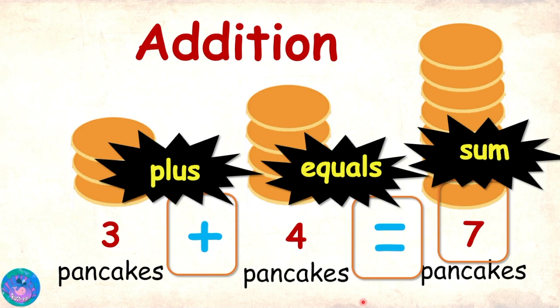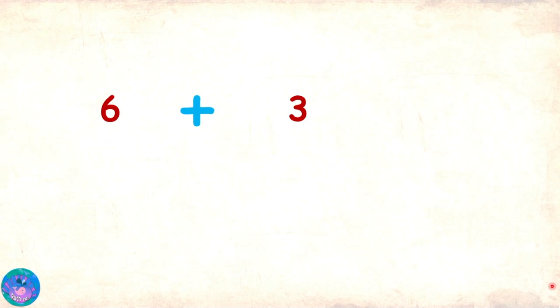The answer of addition is also called sum. So we can also read it as three pancakes plus four pancakes equals seven pancakes. Yes, you can. So let's see addition of some more numbers.